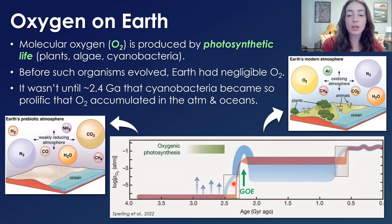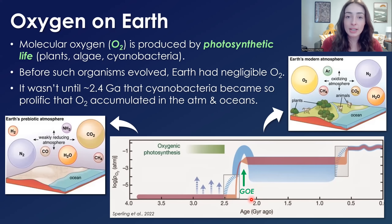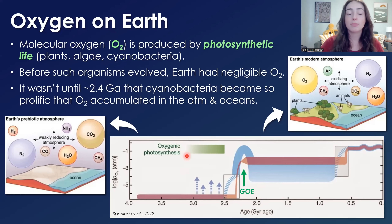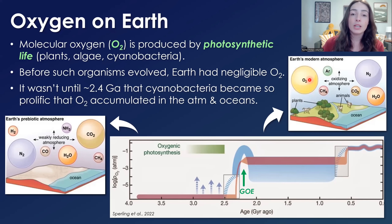It wasn't until about 2.4 billion years ago, during the Great Oxidation Event, or GOE, that oxygen began accumulating in appreciable amounts in the oceans and atmosphere of Earth. This was due to the spread of oxygenic — oxygen-producing — photosynthetic life, in this case cyanobacteria. Plants and algae hadn't evolved yet, but these cyanobacteria had become so prolific and produced so much oxygen that it finally began building up as molecular O2 in the atmosphere and oceans.